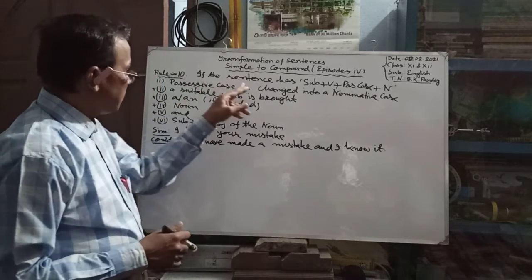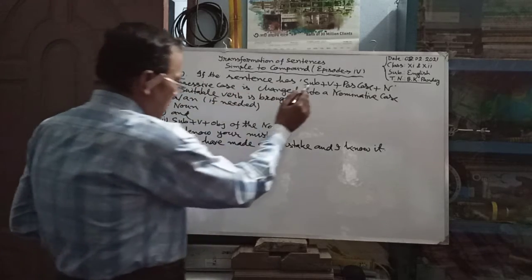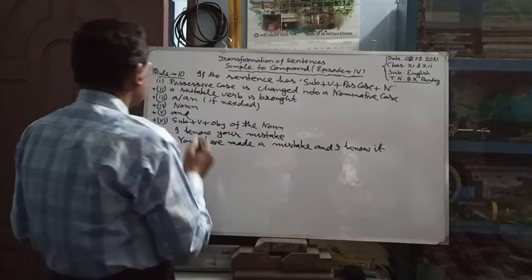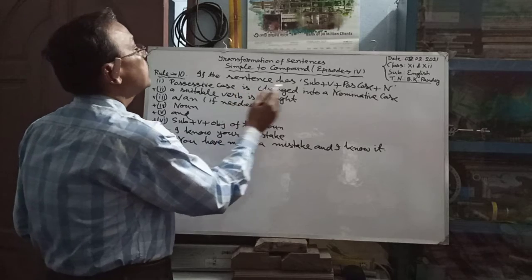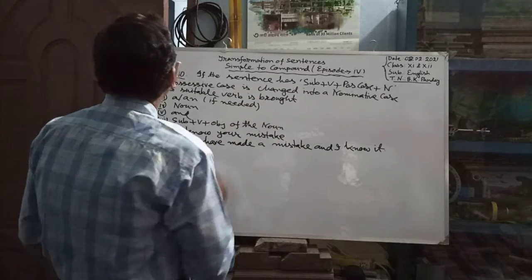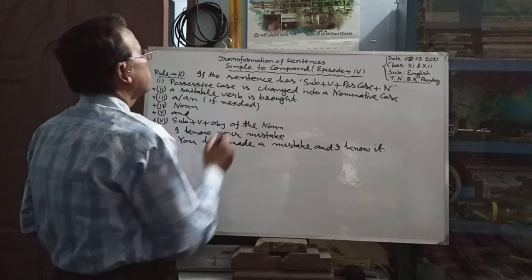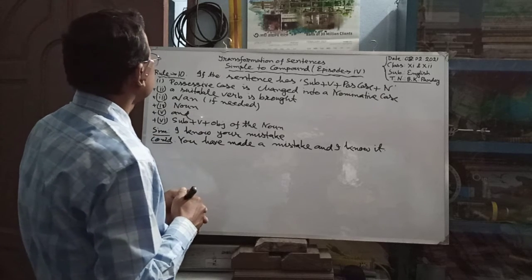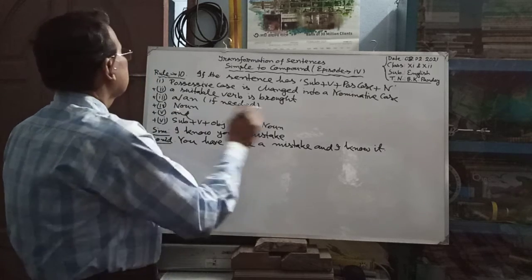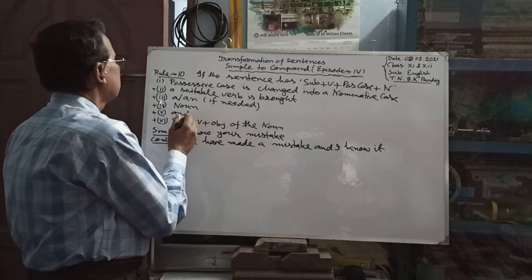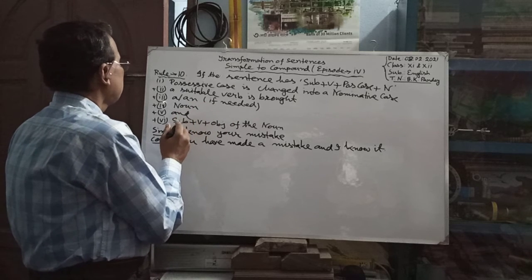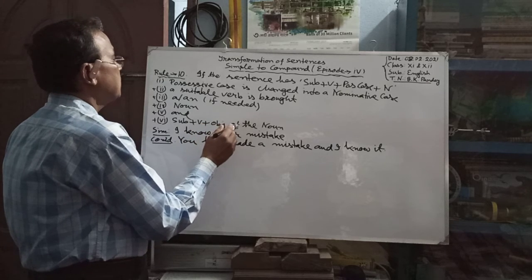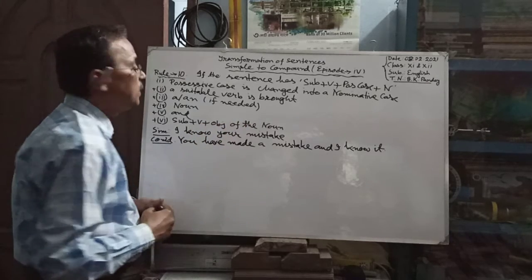Rule No. 10: If the sentence has subject plus verb plus possessive case then noun, we have to change the possessive case into a nominative case. Then a suitable verb is brought, then 'a' or 'an' if necessary, then the given noun, then 'and', and last of all subject plus verb and the objective case of the noun.